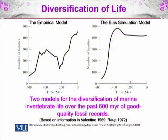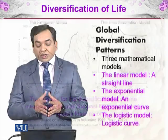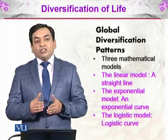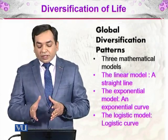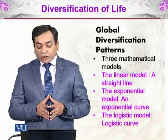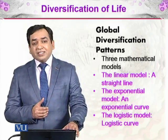We can see the two models given by the two scientists — Valentin 1969 and Raup 1972. The left-hand side empirical model from Valentin shows the jerky increase, while Raup's model shows an initial increase followed by a plateau. There are three mathematical models showing global diversification patterns: a linear model which is a straight line, an exponential model which increases exponentially, and a logistic model showing an S-shaped sigmoidal curve.